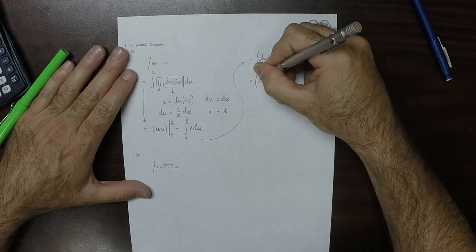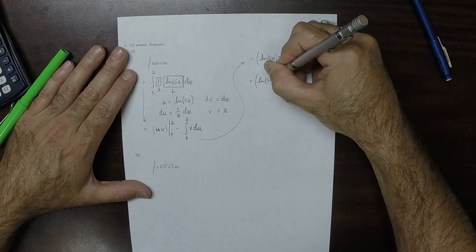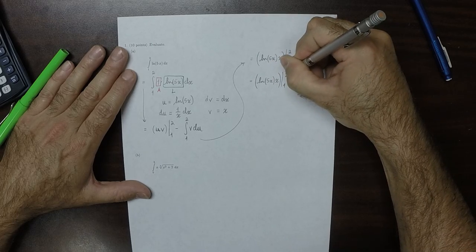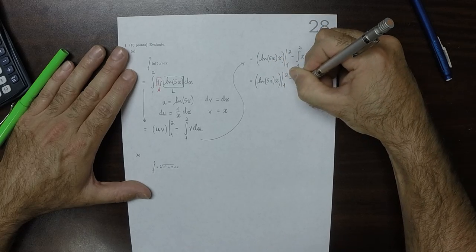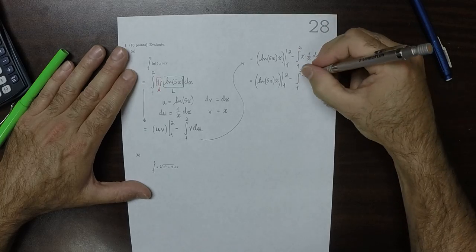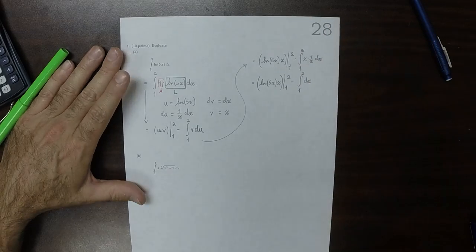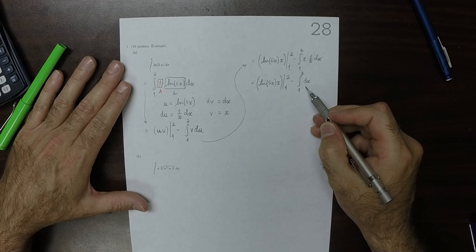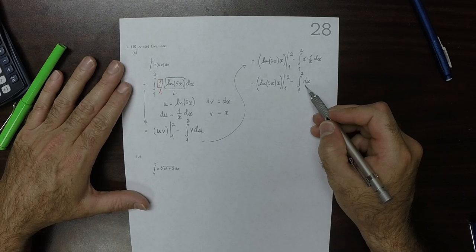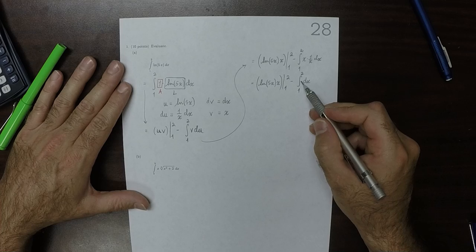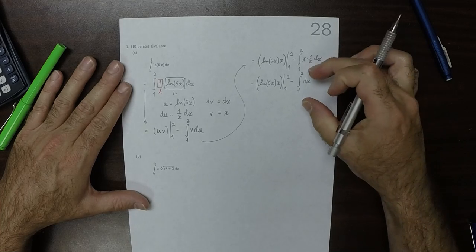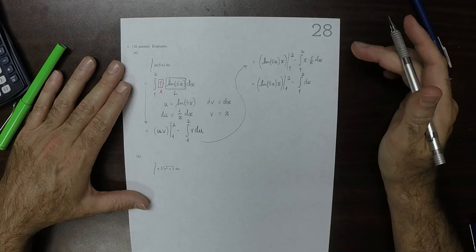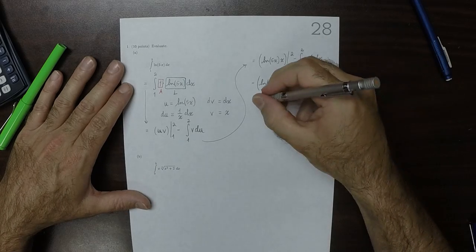So this would be x log 5x from 1 to 2, minus integral from 1 to 2 of just dx. Well, that integral represents a rectangle. So that's a rectangle of height 1, because it's 1 dx, and of length 1, because it's 2 minus 1. So that's just a fancy way to write 1.